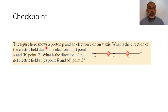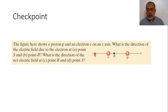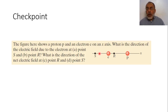It is required to find the direction of the electric field due to the electron only at point S. If I have a positive test charge at point S and the electron is a negative charge, the positive test charge will be attracted toward the electron. This means the direction of the electric field at S due to the electron will be in the positive X direction.